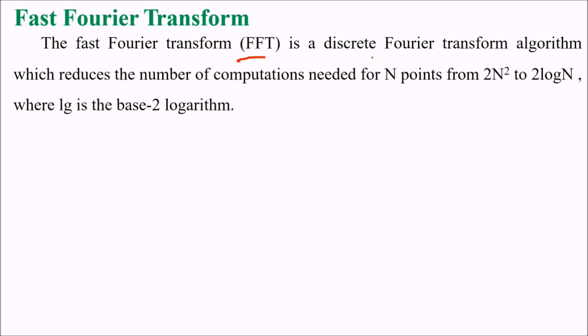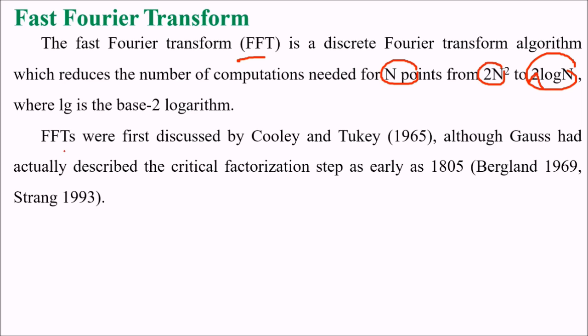This FFT is a discrete Fourier transform algorithm that reduces the number of computations needed for n points from n squared to n log n, where n is the base-2 logarithm. As we said, FFT was first discussed by Cooley and Tukey, although Gauss had actually described the critical factorization step as early as 1805.